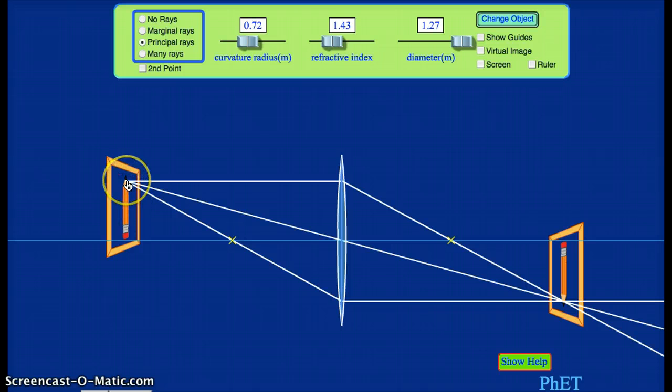And then the third principal ray, again, starting from the tip of our pencil. This one is almost the opposite of the first ray we drew. This one is going to pass through the focal point on the incoming side of our lens. And then once it hits the middle of the lens, it will travel straight out the other side, traveling horizontal or perpendicular to the lens on the outgoing side.